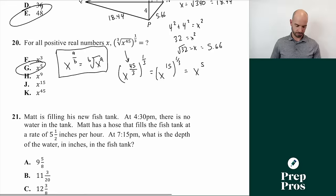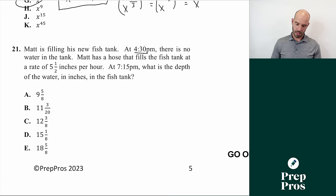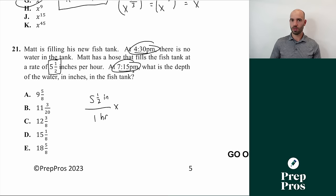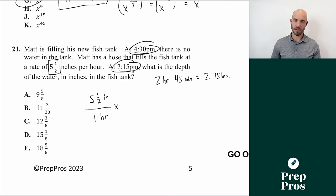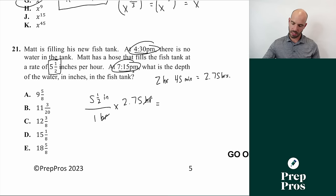Number twenty-one: a fish tank starts filling at 4:30 PM at a rate of 5.5 inches per hour. At 7:15 PM, what's the depth? From 4:30 to 7:15 is 2 hours and 45 minutes, which equals 2.75 hours because 45 minutes is three-quarters of an hour. Multiply 5.5 times 2.75 to get 15.125 inches, which is 15 and 1/8 inches. The answer is D.